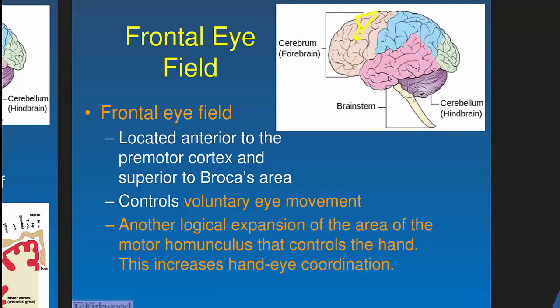The frontal eye field provides extra cortex to control the eye muscles, important for directing gaze, spotting movement, and tracking. It's interesting that this area is adjacent to the hand area in the cortex — a logical arrangement so that you can coordinate your eyes with your hands, enhancing eye-hand coordination.